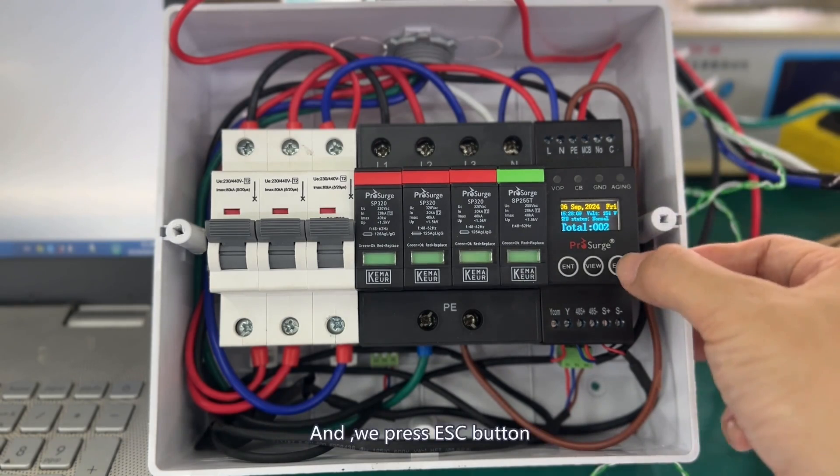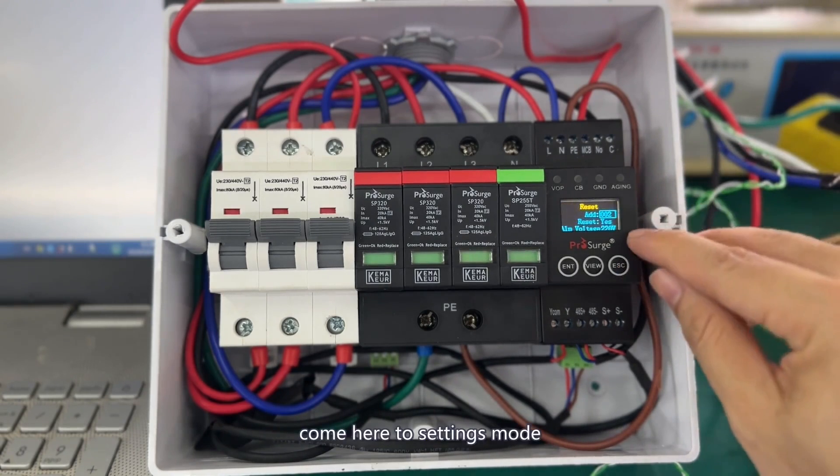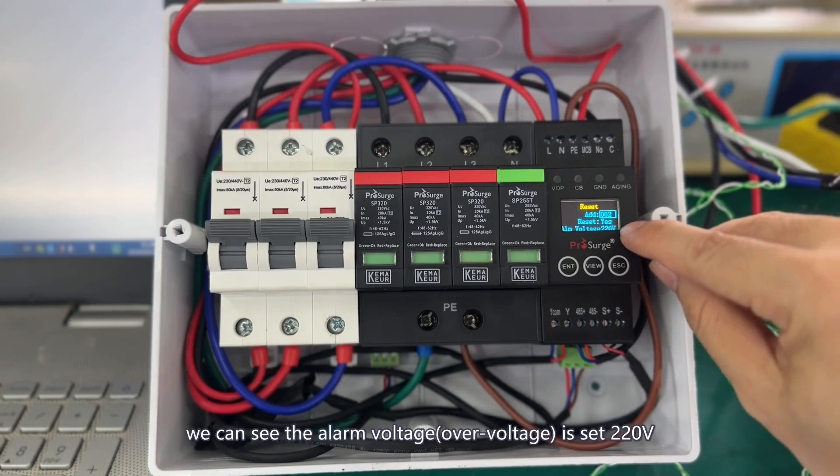We press the DSC button to enter the settings. We can see the alarm voltage is set to 220 volts.